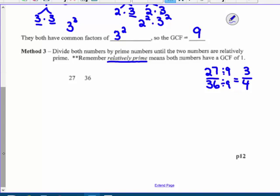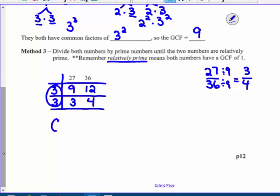So the ladder method, or that inverted division method, they both have a 3 in common. 3 times 9 and 3 times 12. And 9 and 12 still have a 3 in common. 3 times 3 and 3 times 4. 3 and 4 are relatively prime to each other. So the greatest common factor is the product of common primes, which is 9. 3 times 3.